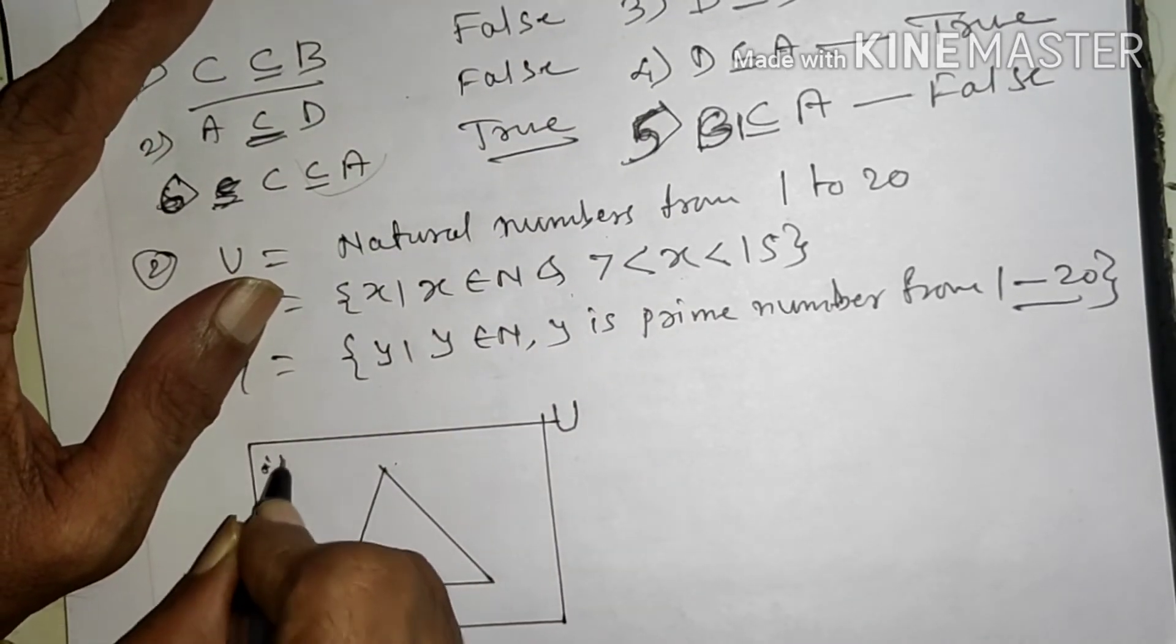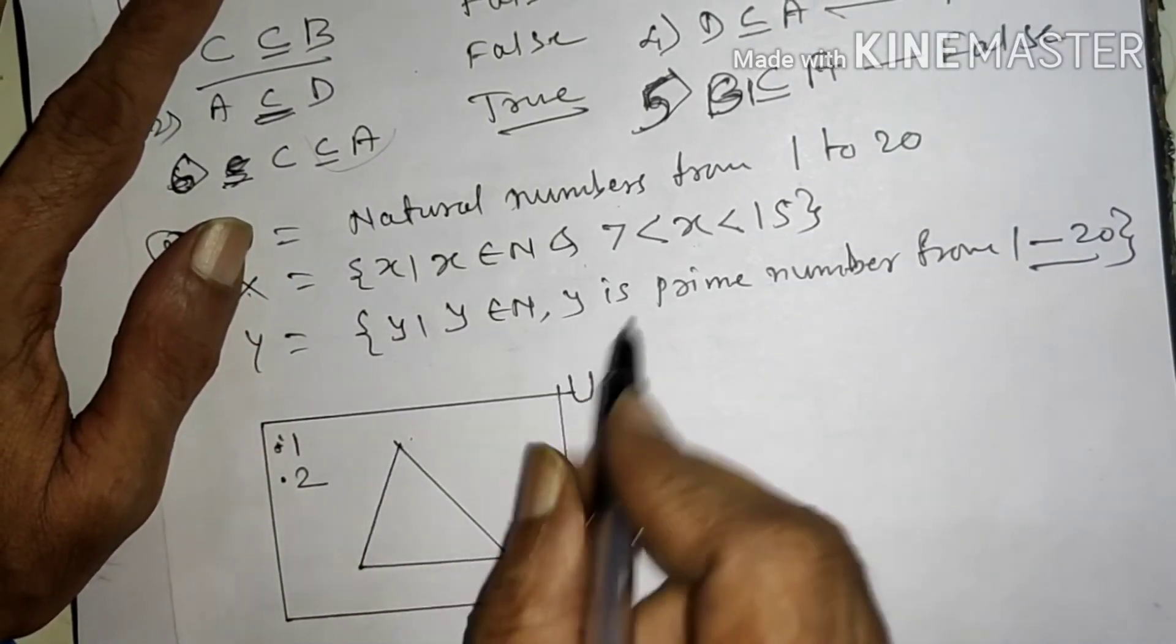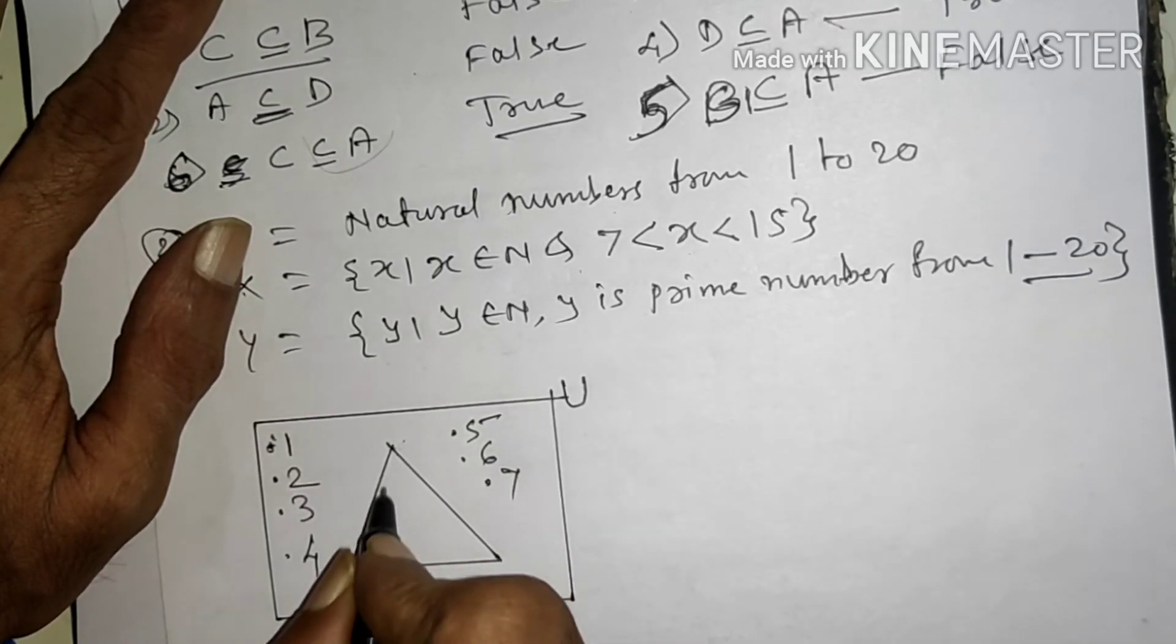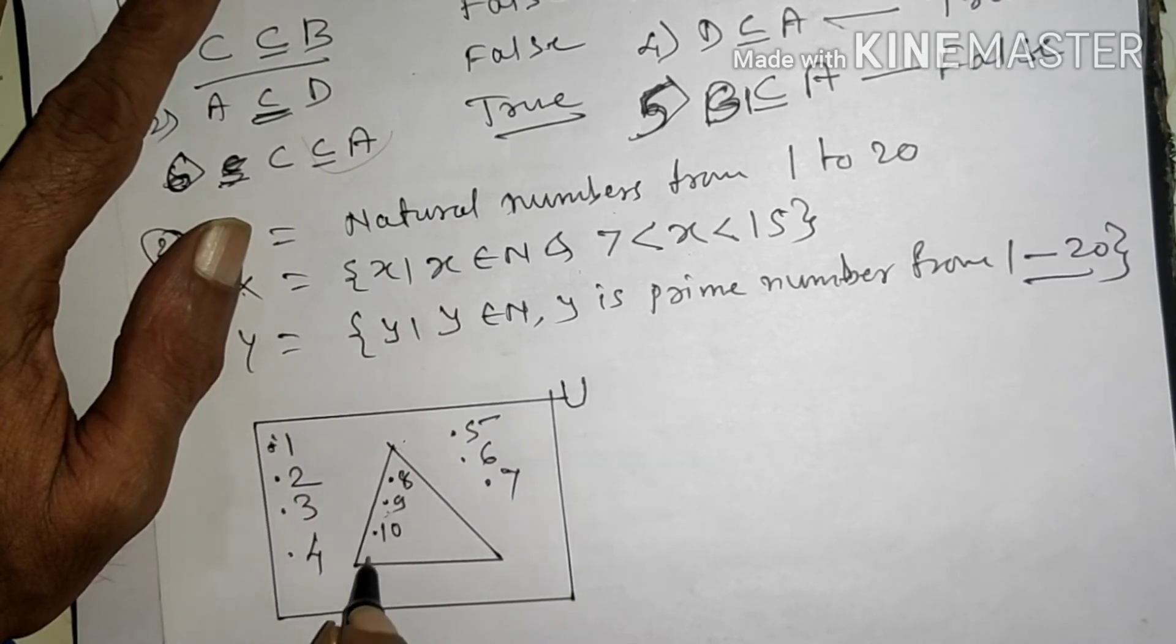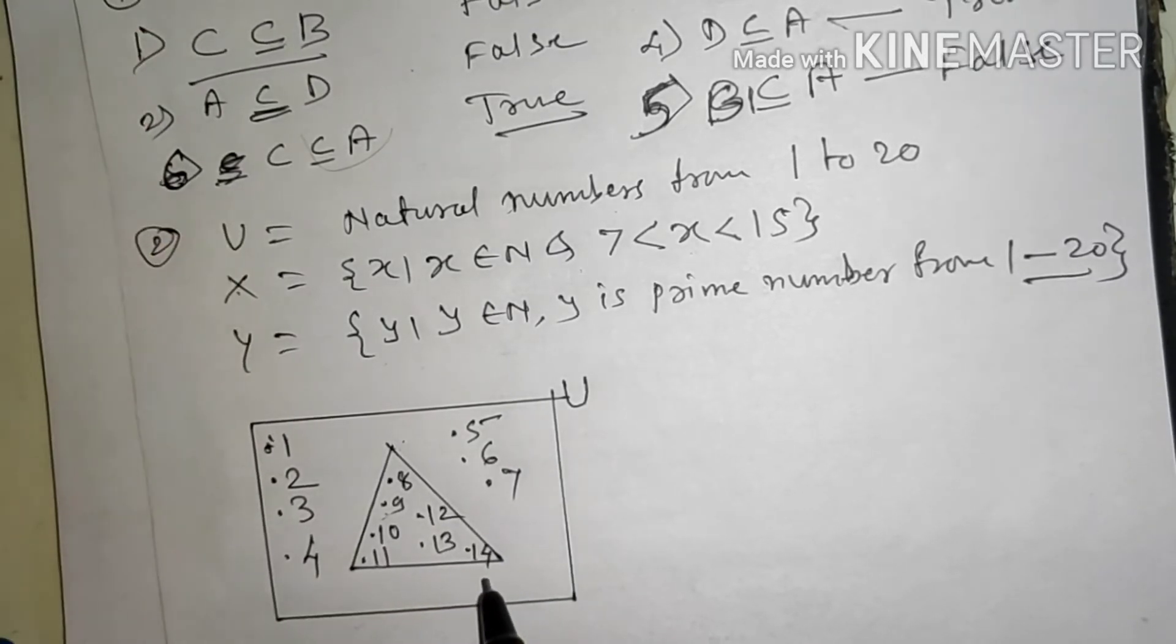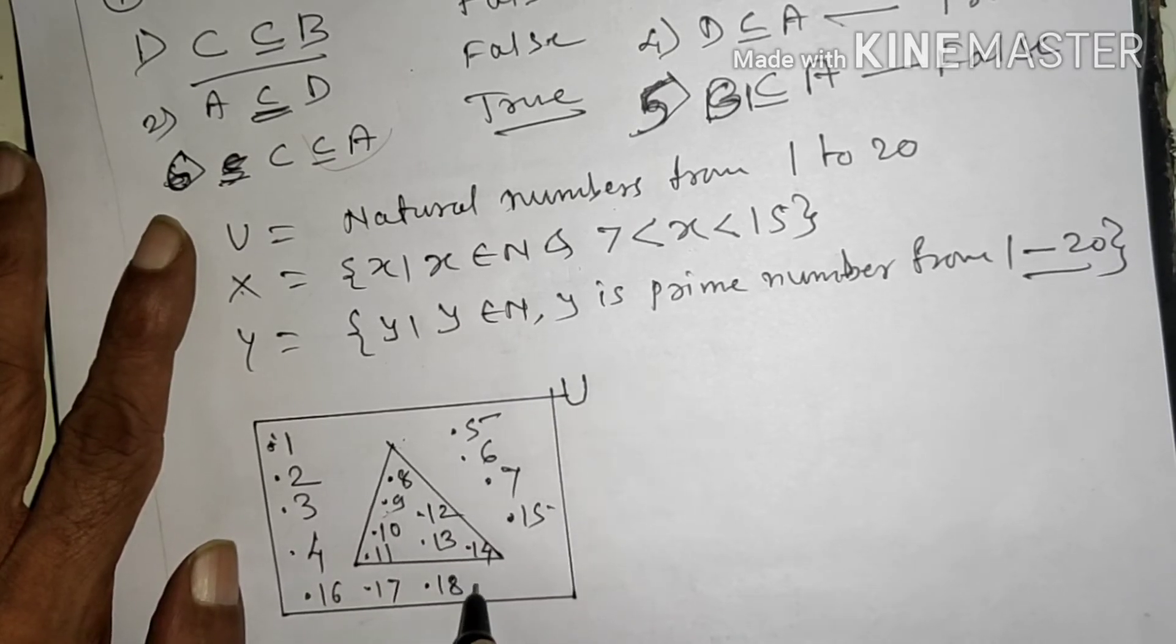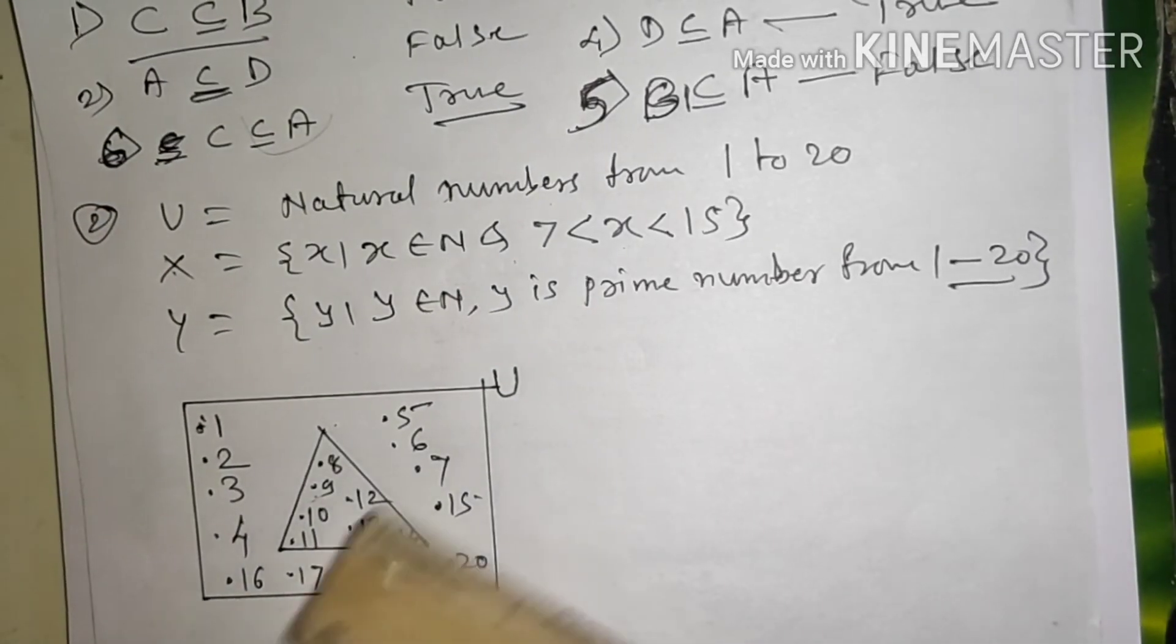To 1 chhota hai to nahi aayega is X mein, 2 bhi chhota hai, 3, 4, 5, 6, 7. Ab 8 yahan aa sakta hai, 9, 10, 11, 12, 13, 14. Aage 15, 16, 17, 18, 19, aur 20 yahan aa gaye.